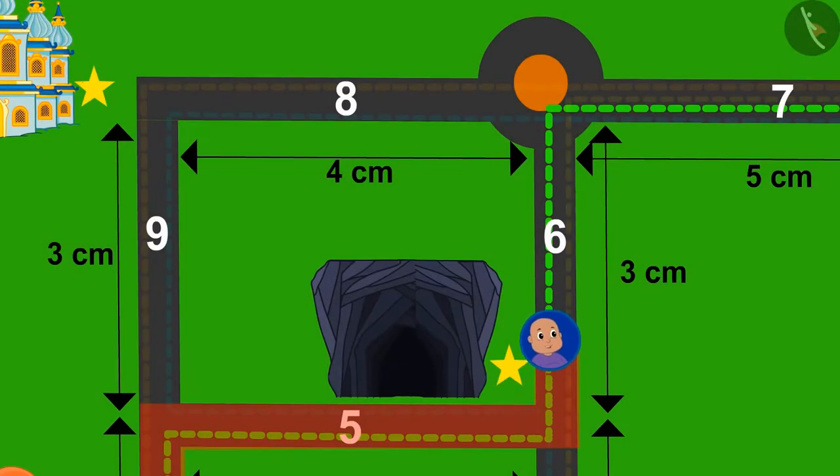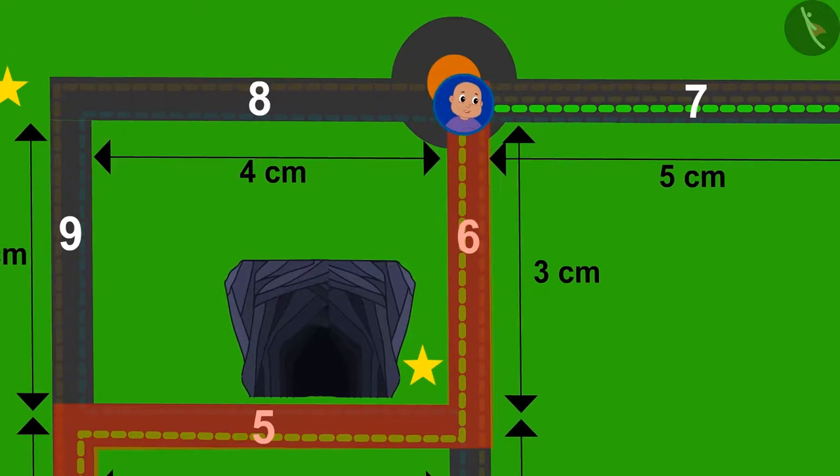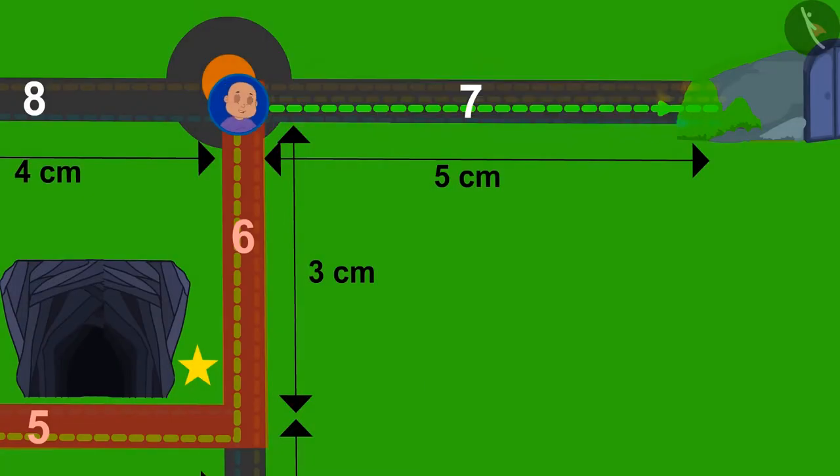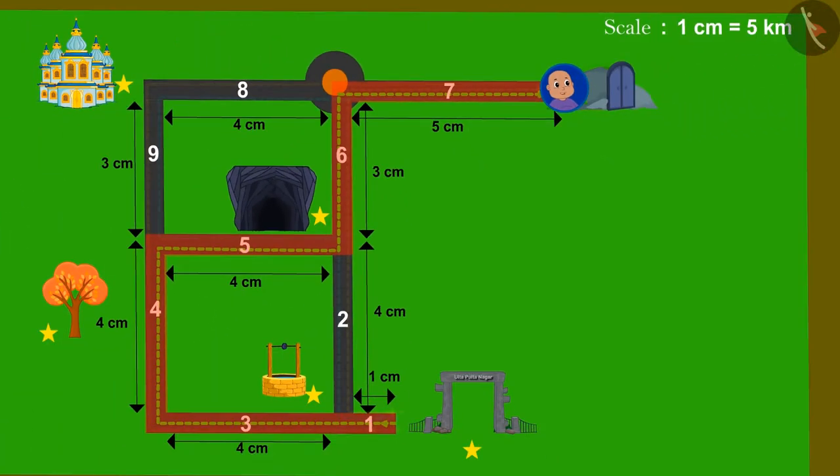Bablu ran fast and crossed road number 6. Now, which road will he take after turning right? Road number 7. Bablu crossed road number 7 from the spot and reached the exit gate.